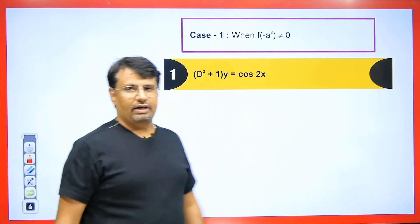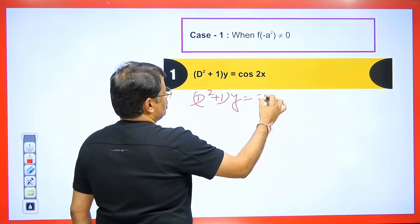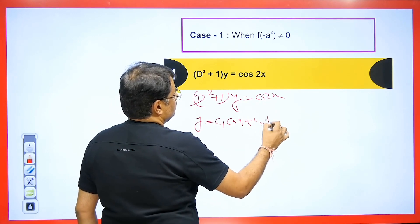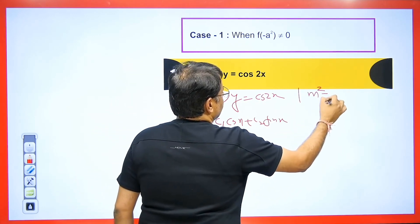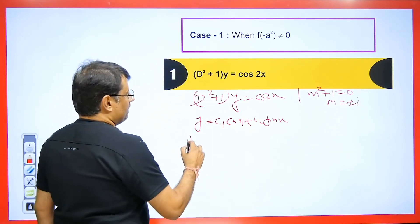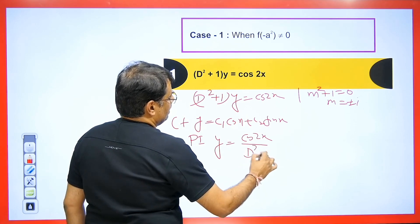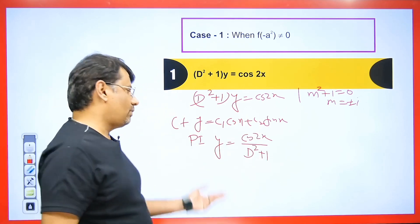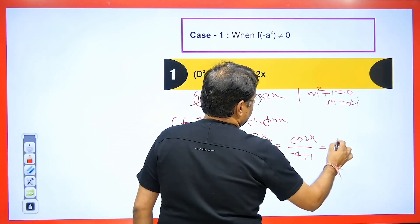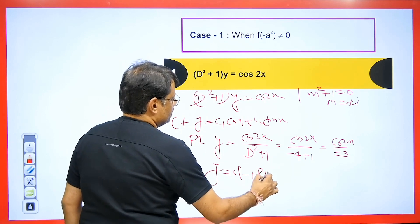If cos is given, the process is the same. For example, if y = cos 2x / (D² + 1), we put −4 for D², getting cos 2x / (−4 + 1) = cos 2x / (−3). So the final answer will be CF + PI. In this way we solve this question.